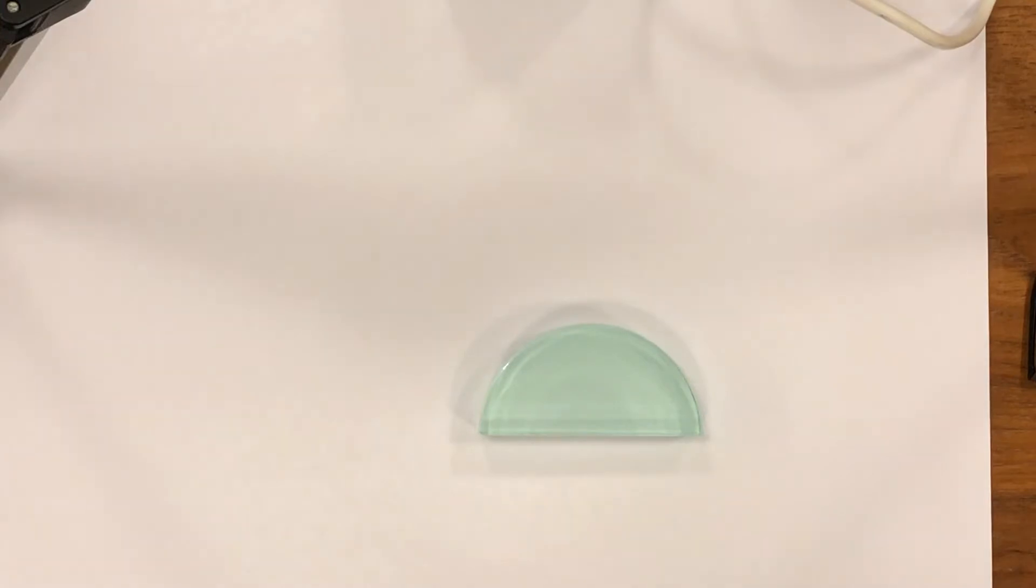In this experiment we're going to use a ray box with a single ray of light to investigate refraction as it comes out of a glass block.